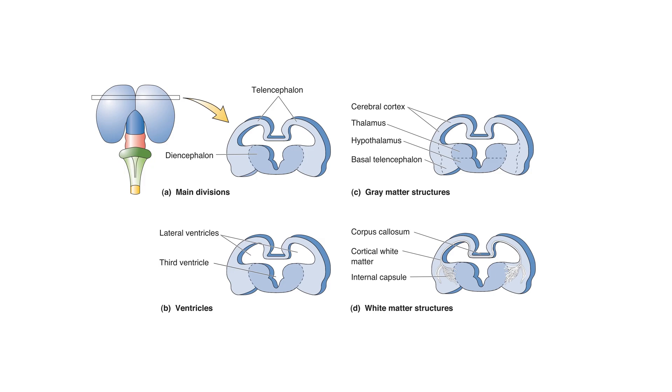These axons bundle together to form three major white matter systems: the cortical white matter, the corpus callosum, and the internal capsule. The cortical white matter contains all the axons that run to and from the neurons in the cerebral cortex. The corpus callosum is continuous with the cortical white matter and forms an axonal bridge that links cortical neurons of the two cerebral hemispheres. The cortical white matter is also continuous with the internal capsule, which links the cortex with the brain stem, particularly the thalamus.